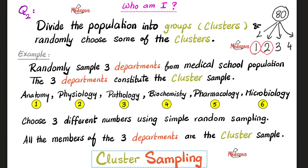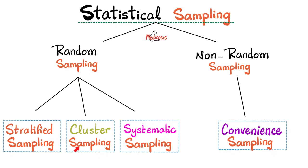We take all members in those selected departments. All of these members are the cluster sample. The departments not selected? Disregard them — no one likes biochemistry anyway. Cluster sampling is a subtype of random sampling.